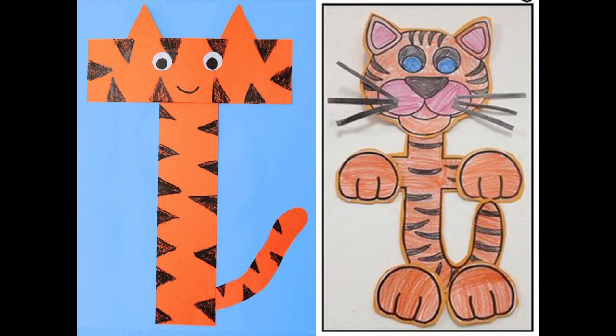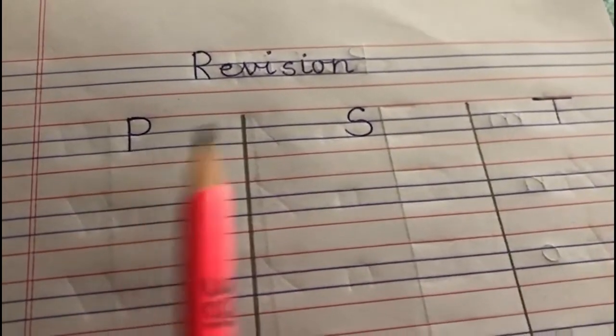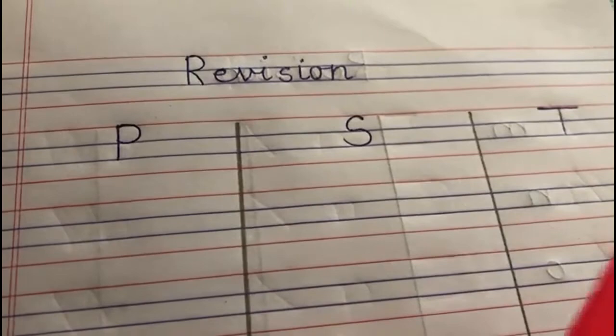So we will not see it again, but now what we will do is we are going to revise how to write these letters in our notebook. So come on, let's begin. Take a look. Are we ready to write letter P, S, and T in the notebook? Capital P, capital S, and capital T. First we will write capital P.